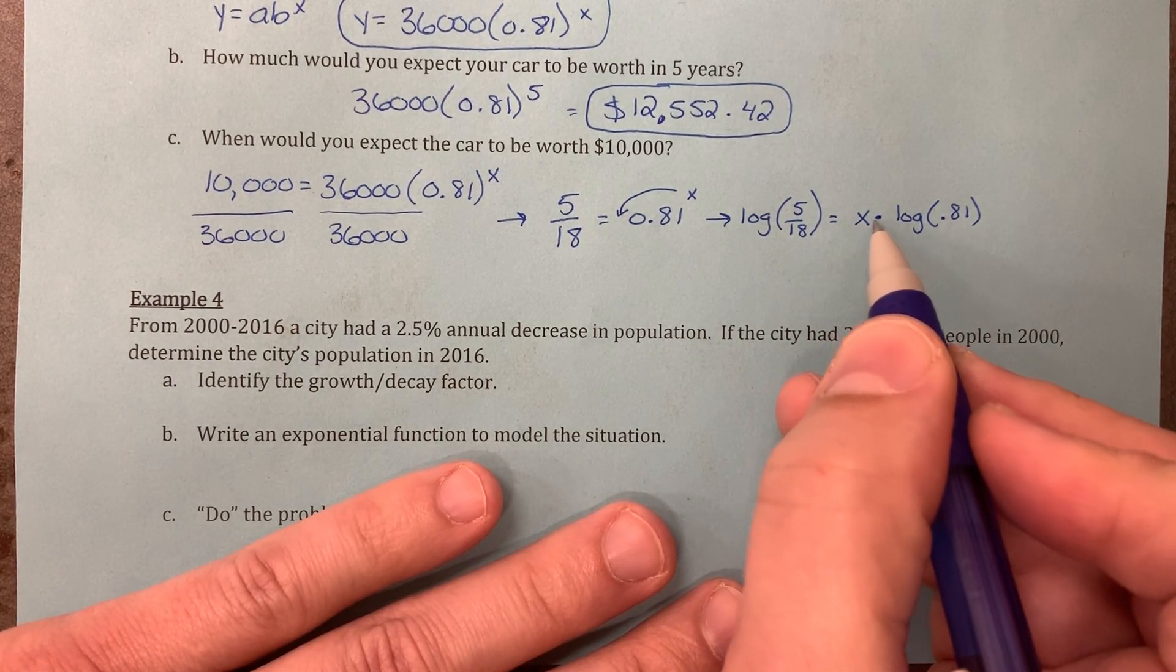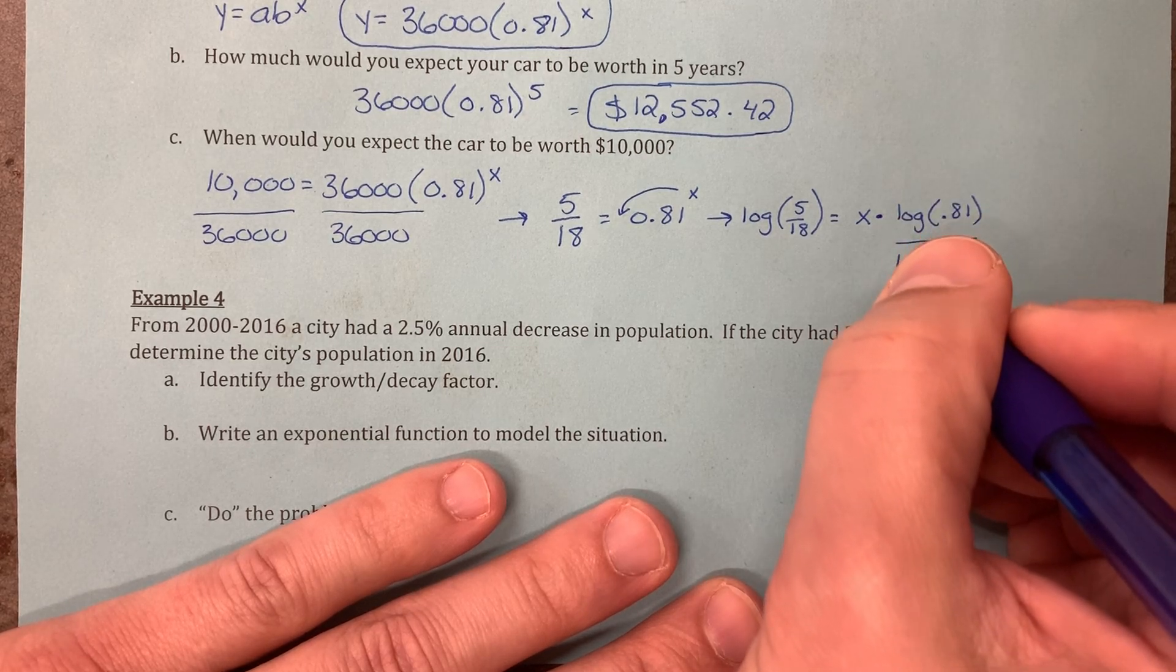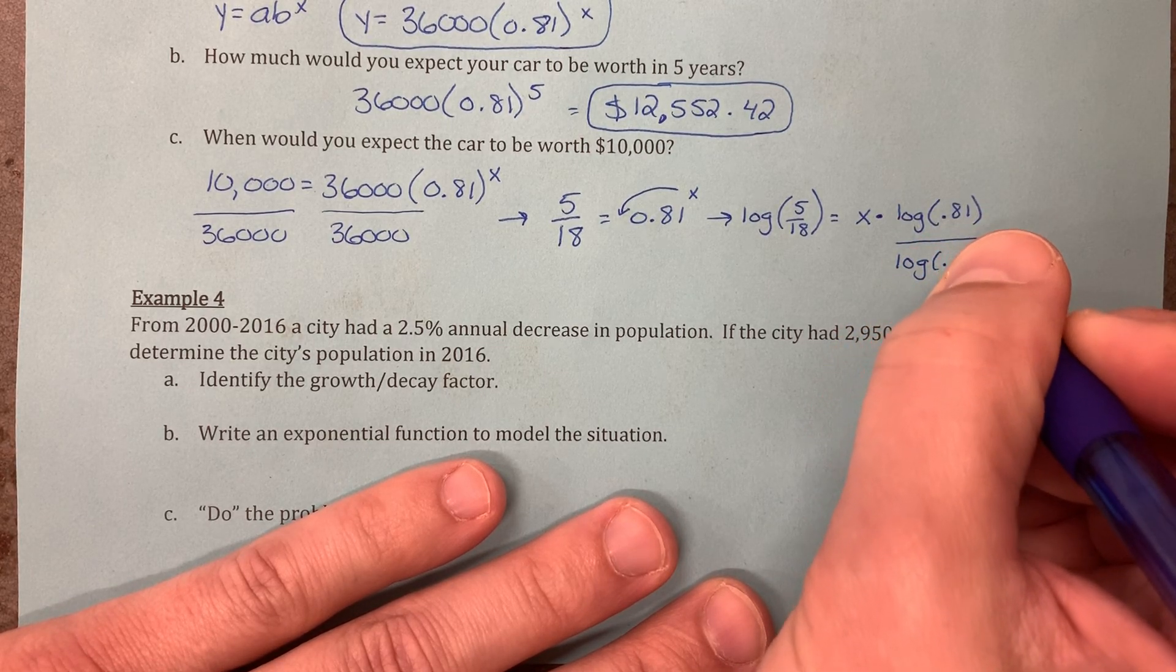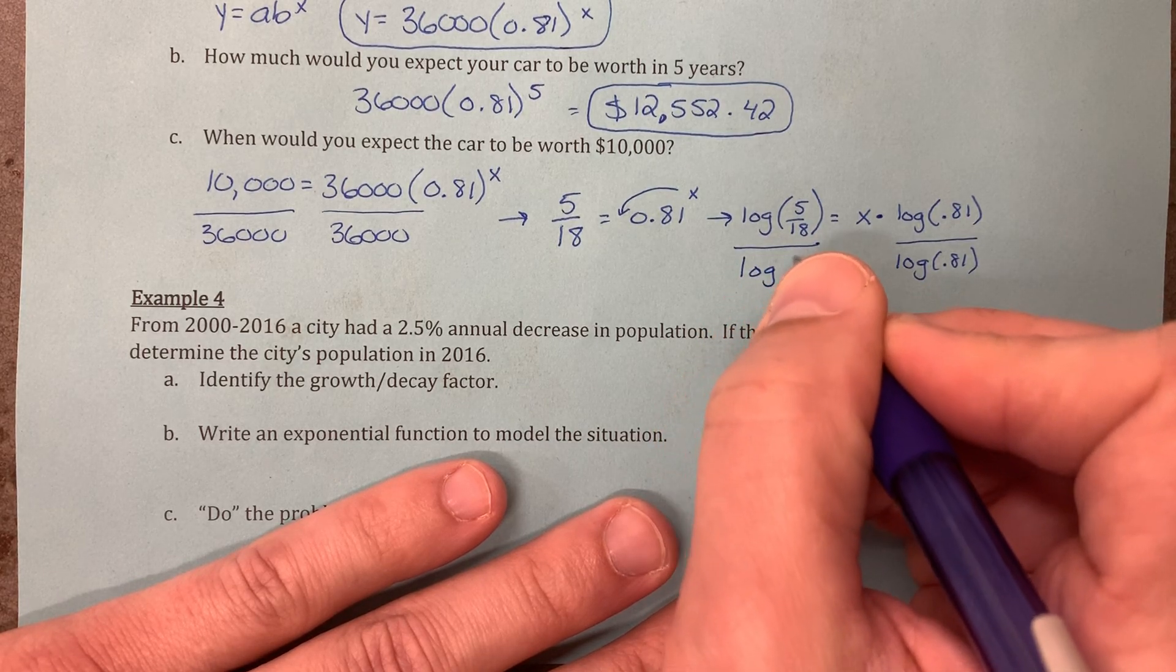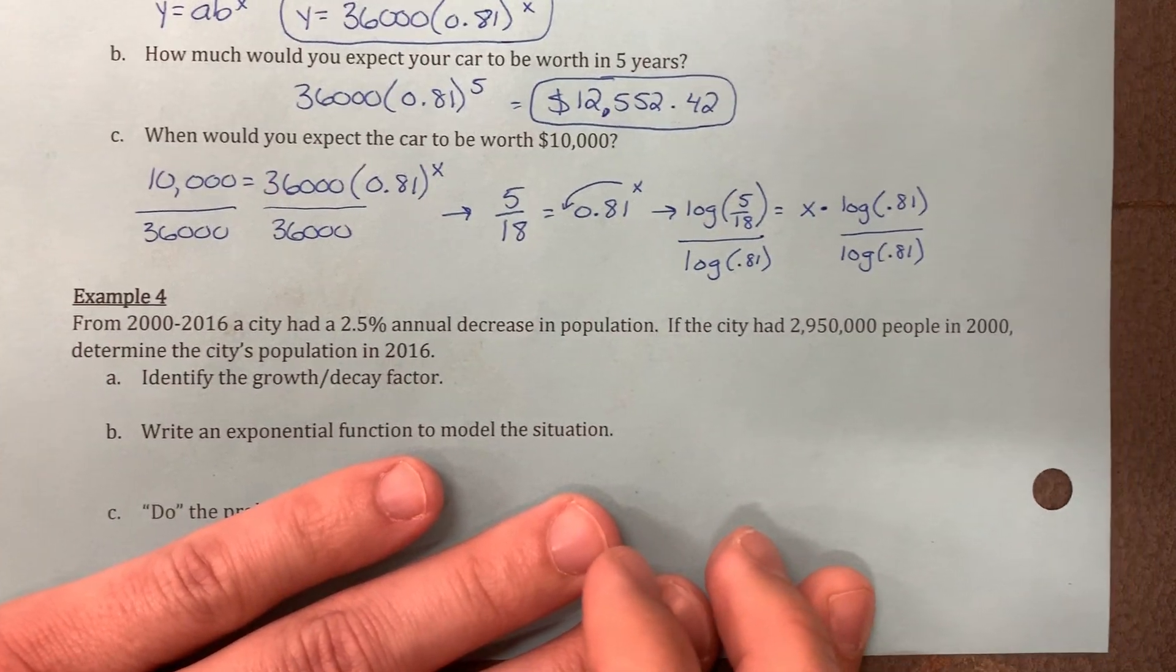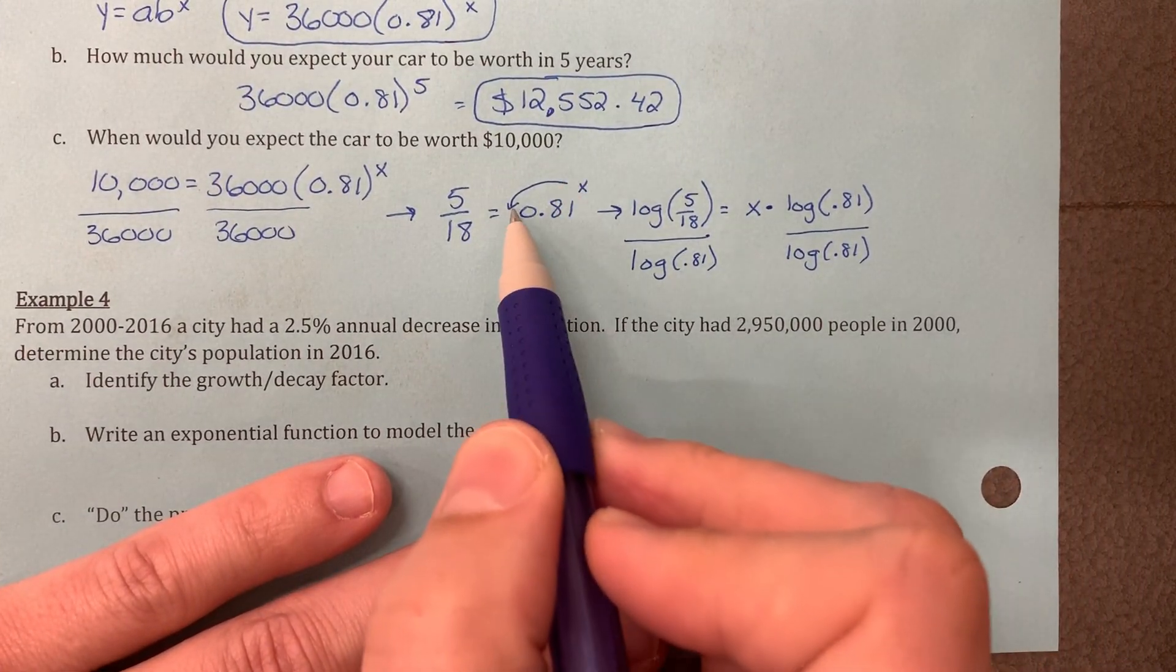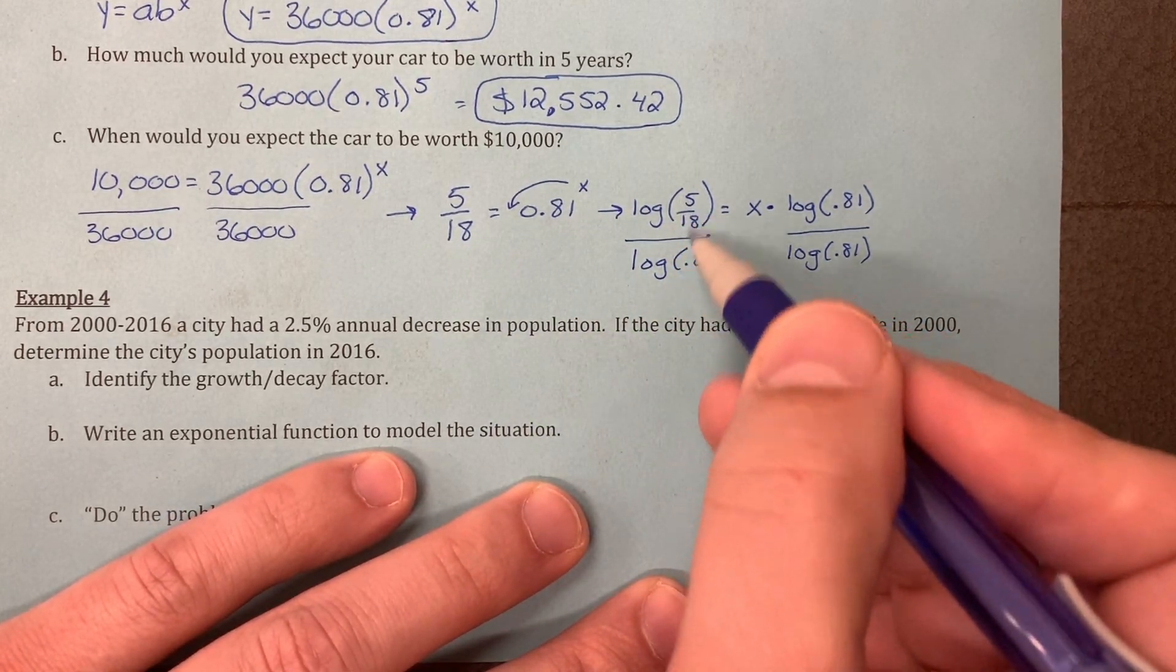Now, x is actually being multiplied to this, so we can divide to solve for x. Divide by log of 0.81 on both sides. And don't panic because the log is in the calculator. It's actually a very easy task. You just got to remember to move the x and change both numbers to a log. And so this is what we're going to work out right here.